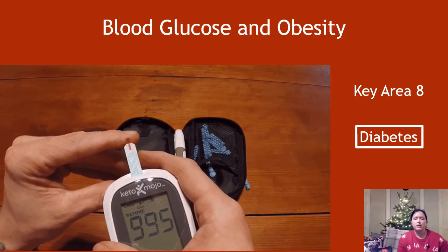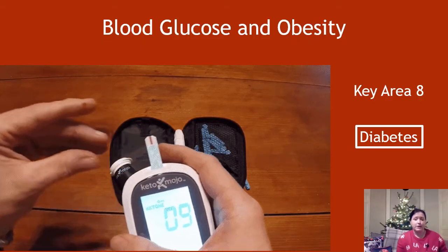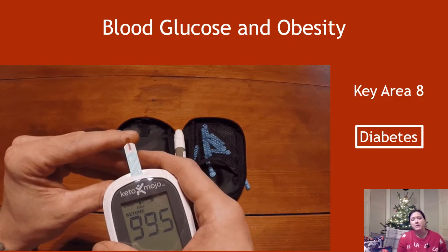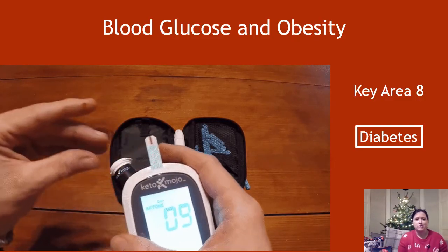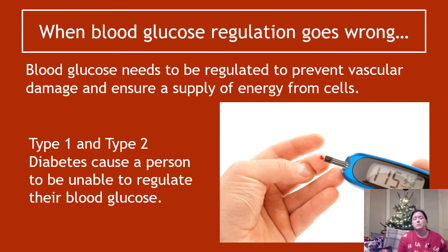Some of the issues from the previous video about how high blood glucose can lead to vascular damage are going to be relevant here. Blood glucose has to be regulated in order to prevent vascular damage and ensure a supply of energy to cells. Type one and type two diabetes cause a person to be unable to regulate their blood glucose — that's what this whole disease is characterized by.